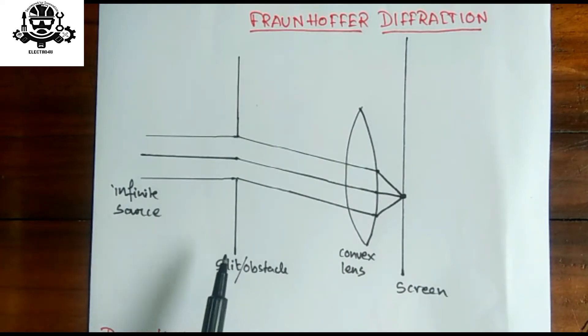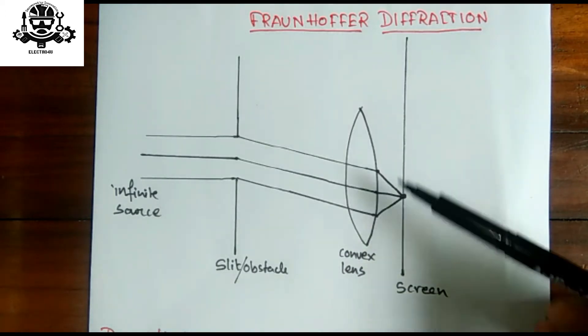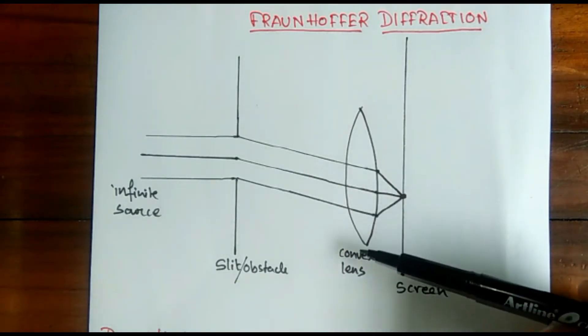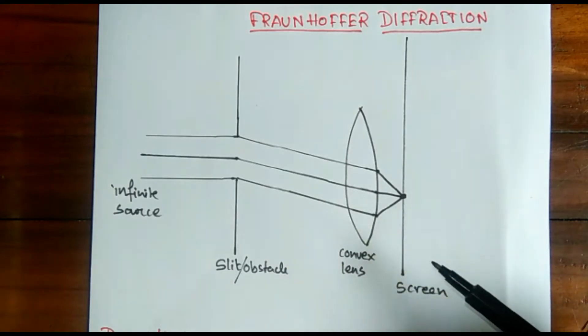For Fraunhofer diffraction, the source from the obstacle or slit is at infinite distance, and so is the screen where the image is formed. But since we need to study this case of Fraunhofer diffraction, we need to have the observation point at some distance to see the image.